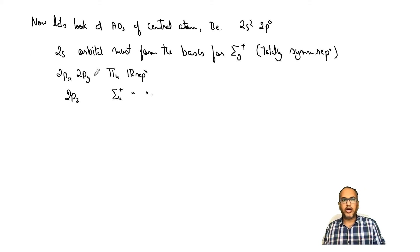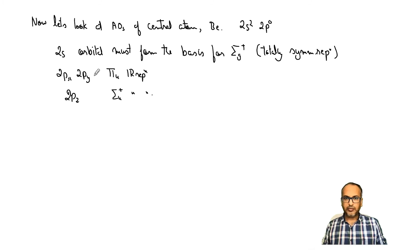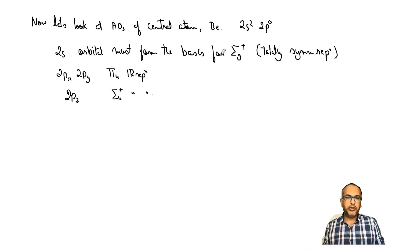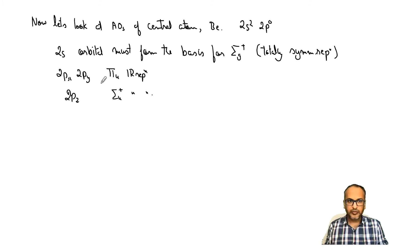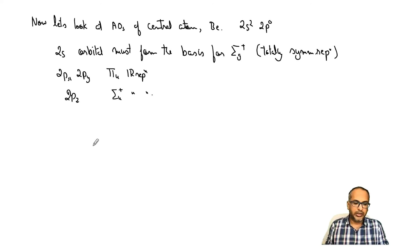Now that we have the symmetry of the SALCs and the symmetry of the central atom orbitals, we know which orbitals will combine with what and which will remain as non-bonding. The px and py orbitals will remain as non-bonding. 2s will combine with φg, and 2pz will combine with φu.